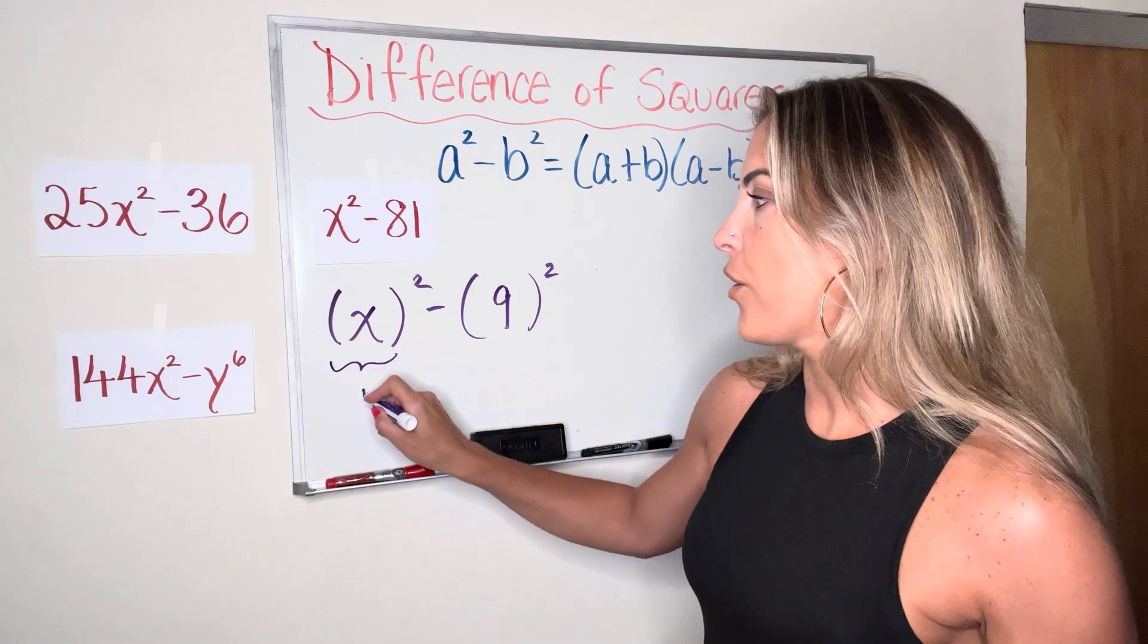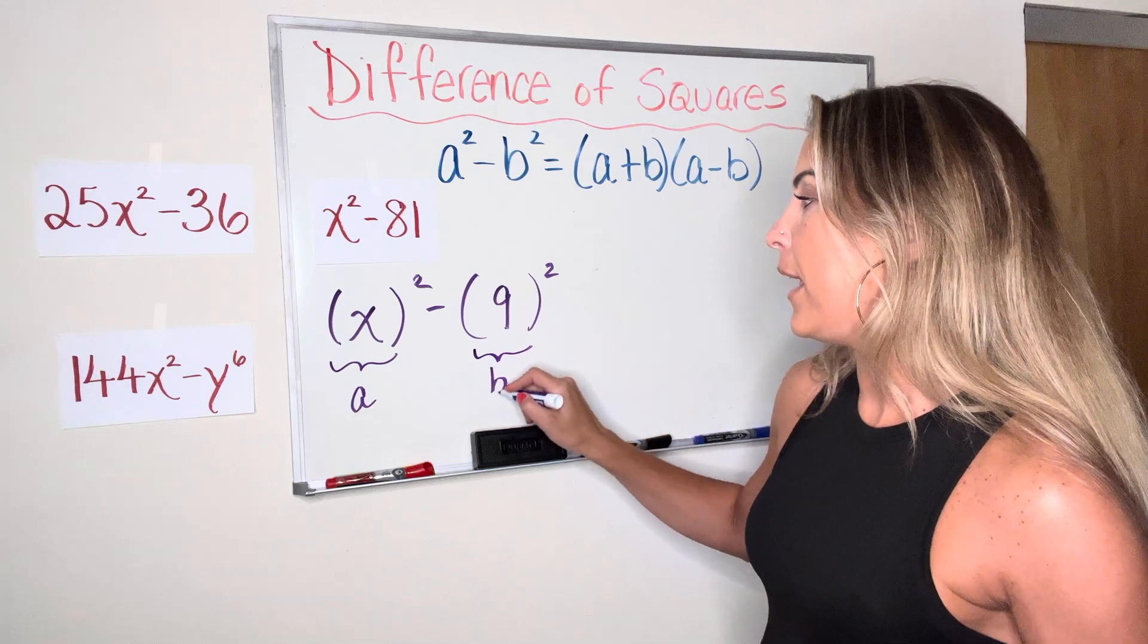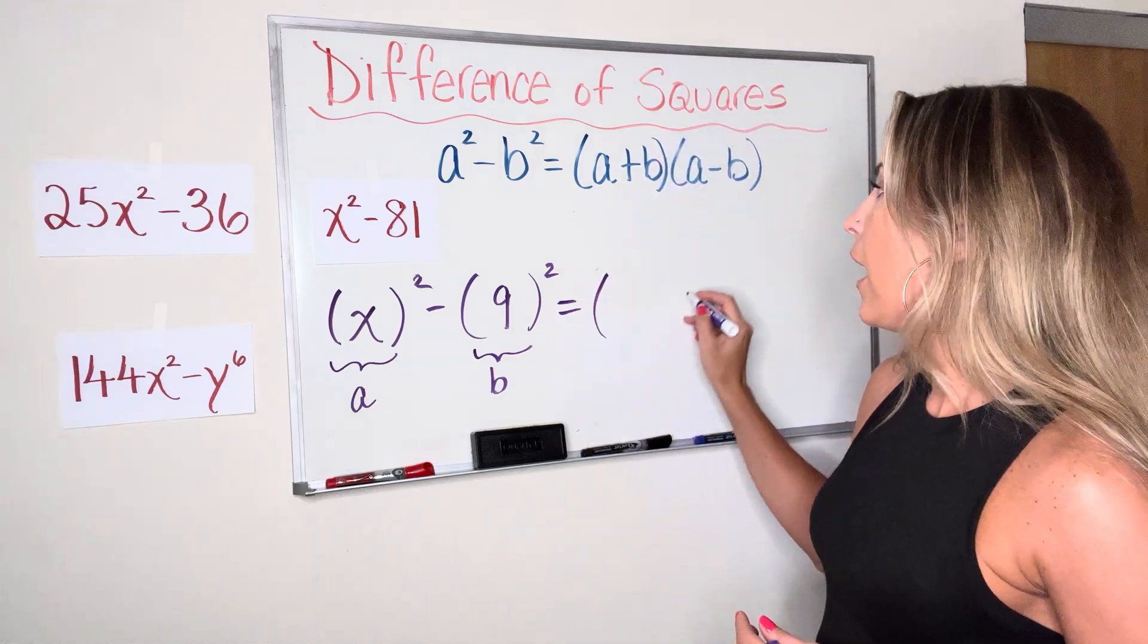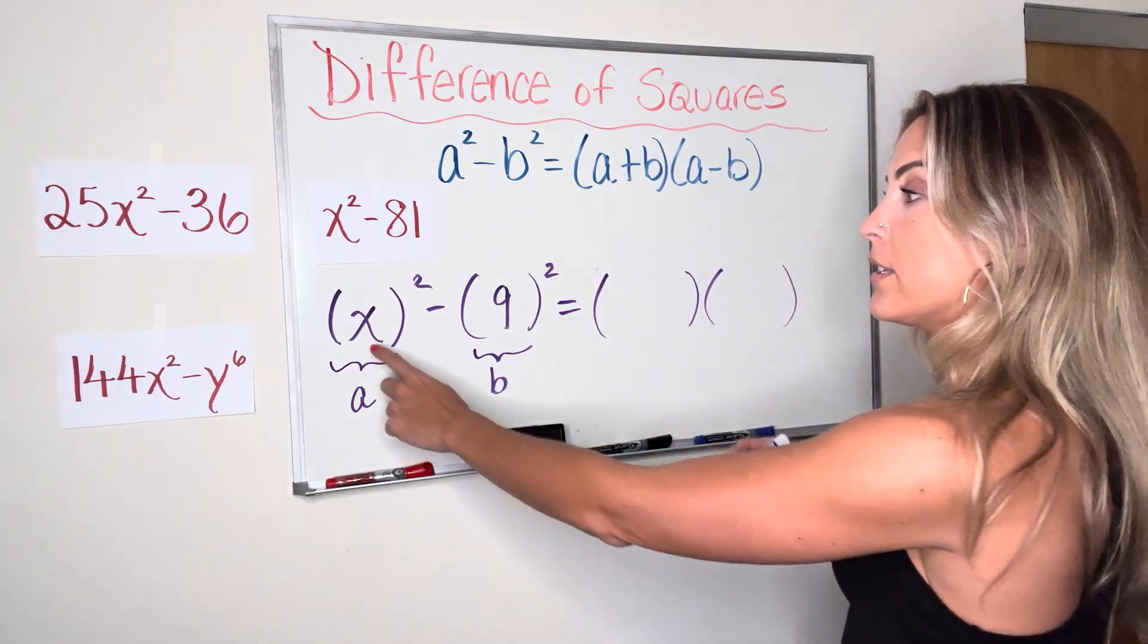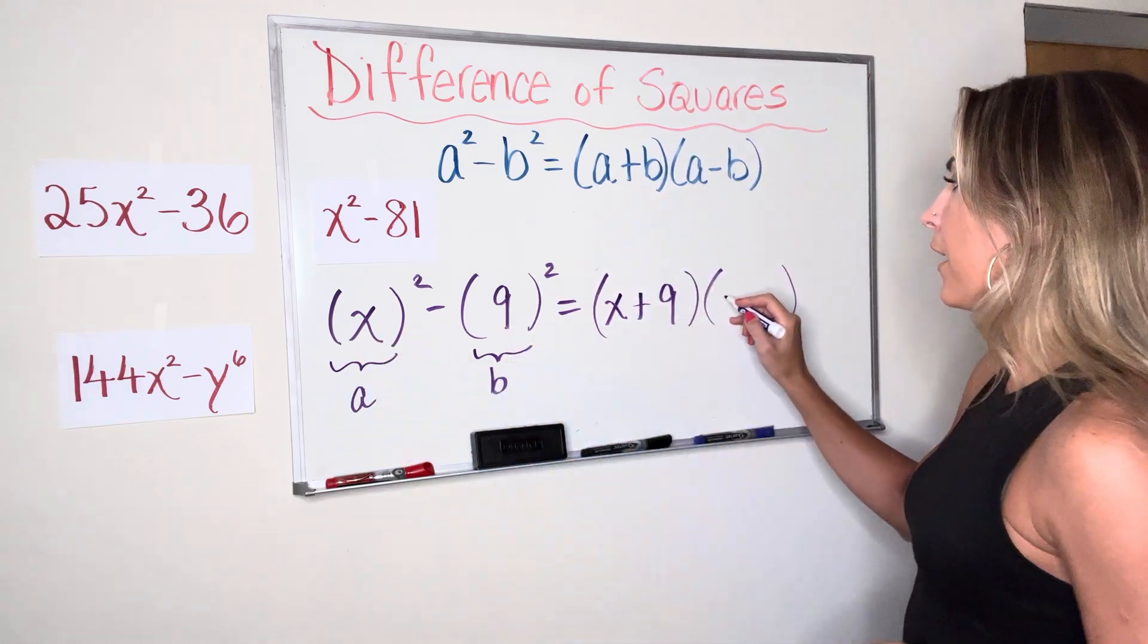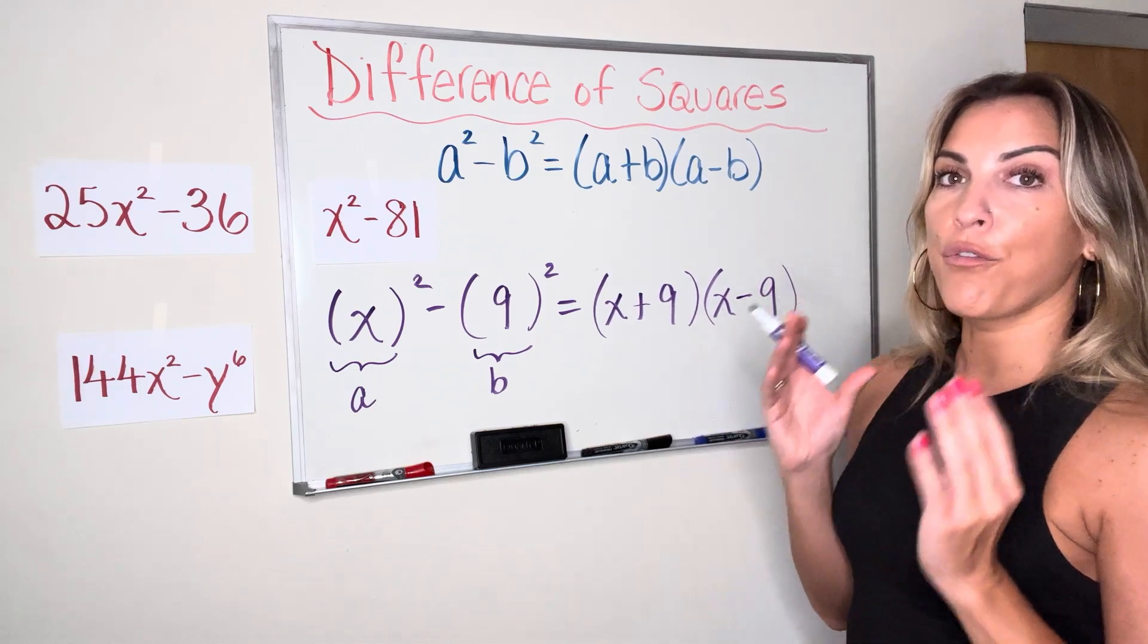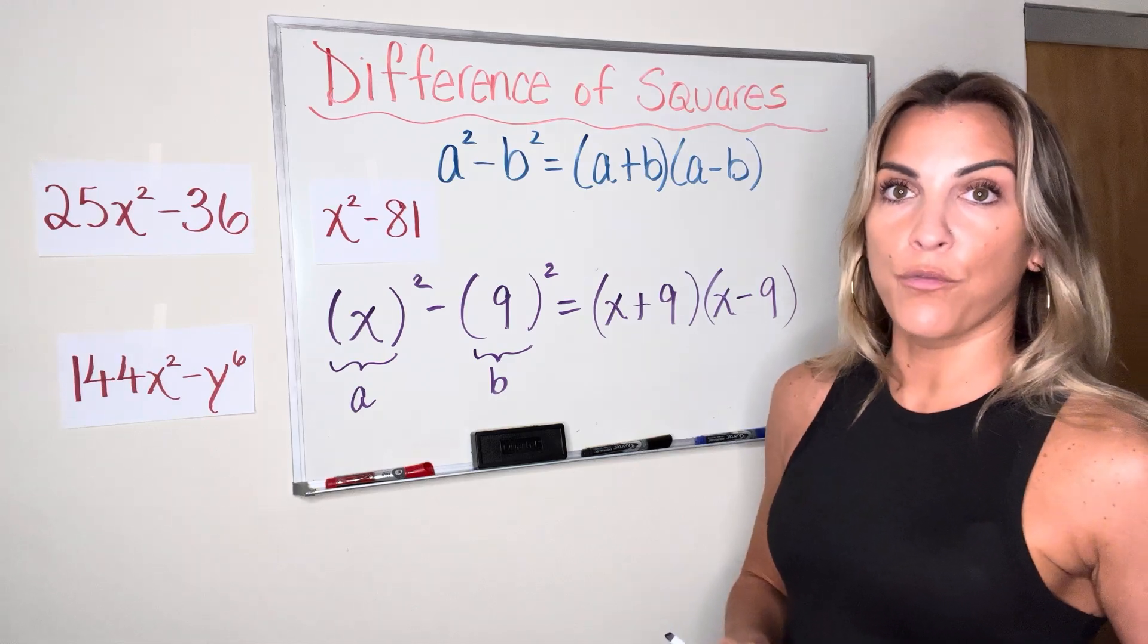it helps you identify what is your a, right? What is being squared first? What's your a squared? And then what is your b? And my b in this case is 9. Once you've identified those two things, you can just plug and play into the formula. So the formula tells me that once I have a and b, I'm just writing a plus b times a minus b. So my a was x plus my b was 9 times, again, my a was x minus my b was 9. So x plus 9 times x minus 9 is the factored version of x squared minus 81 when I apply the difference of squares formula.